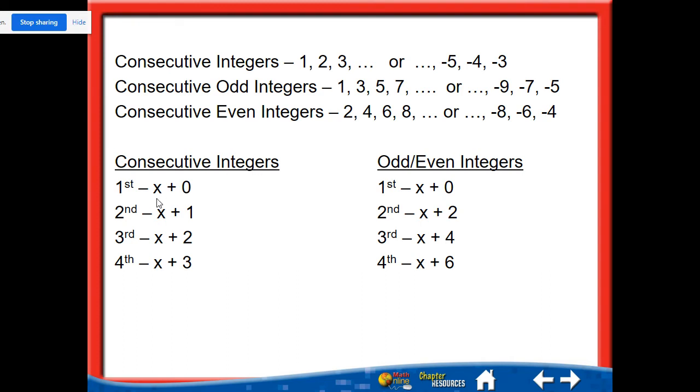Now when you're doing consecutive integers, your first integer is always going to be x plus 0. The second one is x plus 1, x plus 2, and then x plus 3. Notice it only goes up by 1 because it only goes up by 1 each time. For odd or even, now they both fit in the same category because both of them go up by 2s. So 1 to 3 is up by 2, 3 to 5 is up by 2, 5 to 7 is up by 2. Same thing with 2 to 4, 4 to 6. So it's x plus 0 and x plus 2, x plus 4, x plus 6. All right, these are going to be important when you actually do your problems. And I'll show you that in just a minute here when we actually do one of the problems.